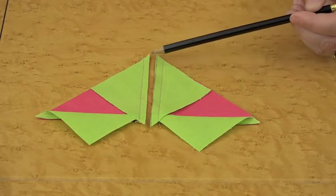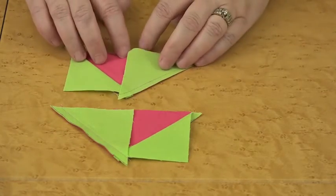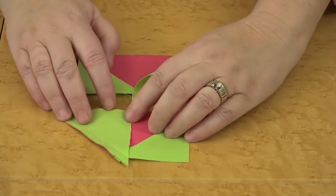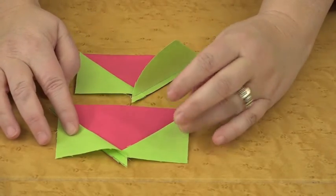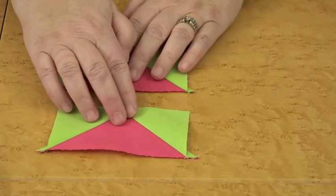So we've cut apart on the drawn line, then you're going to take these to your ironing board and press back the triangles on each side to give you two flying geese units that will look like this.